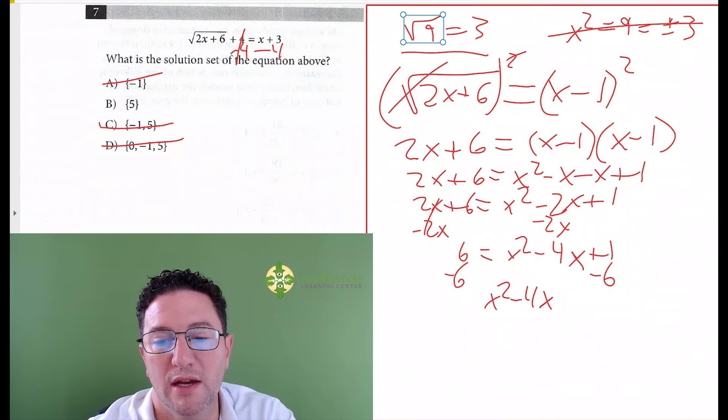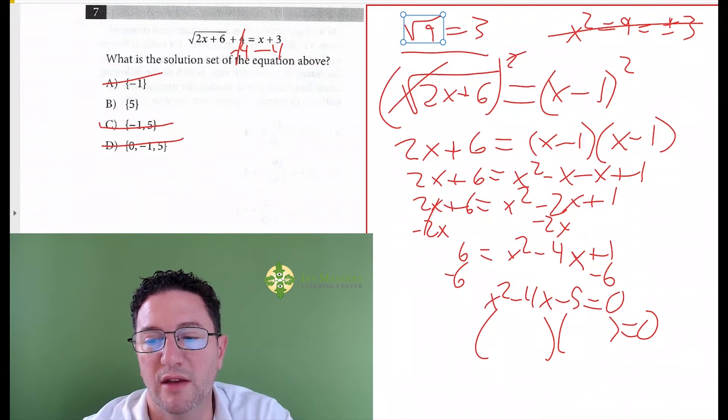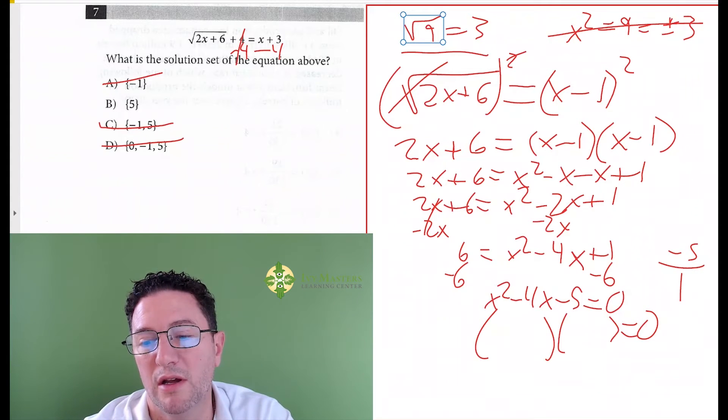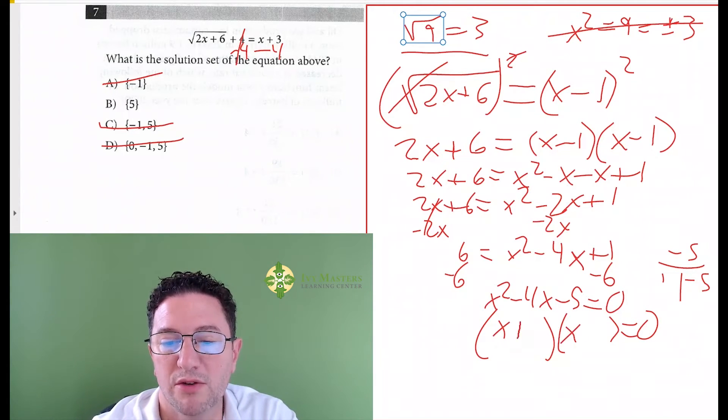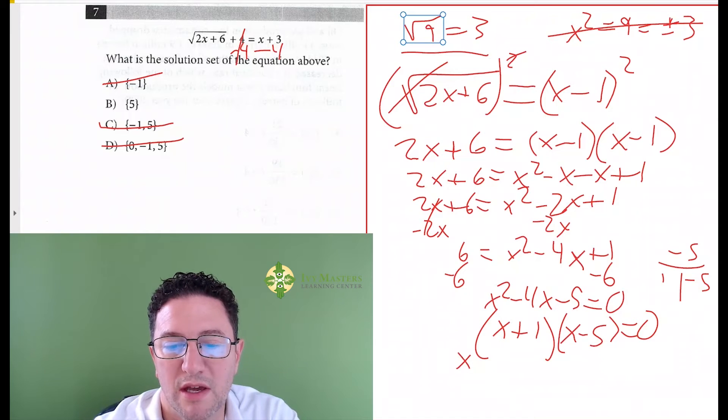And then you factor it, and we need two things that are going to multiply to give you a negative 5 and add to give you a negative 4. Well, if we factor that negative 5, the negative's got to be bigger. So you could do 1 and negative 5, and that's going to work. And so we've got an x here, we've got an x here, your signs are plus minus. And again, it's negative 5, it's positive 1.